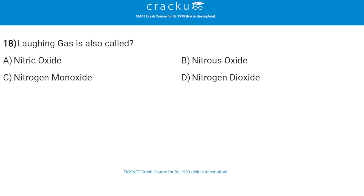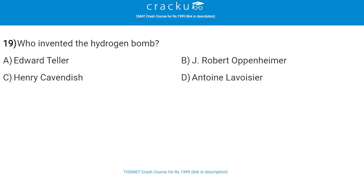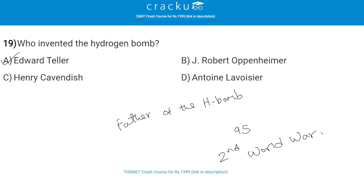Next: laughing gas is also called — the correct answer is nitrous oxide, that is option B. Next: who invented the hydrogen bomb? The correct answer is Edward Teller, that is option A. Edward Teller, the father of the H-bomb, died aged 95. He was one of the most controversial figures to emerge from the US nuclear weapons program instigated during the Second World War.